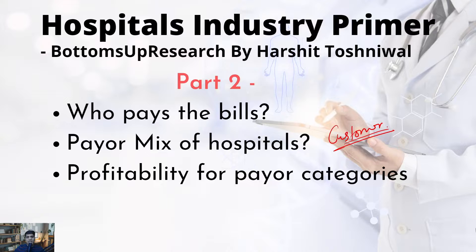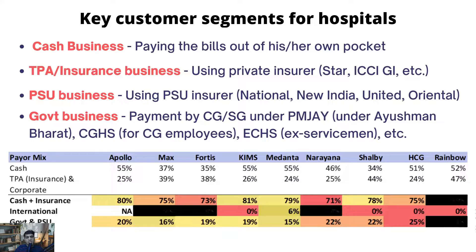There are typically 3 to 4 types of customer segments: cash or self-paying customers, insurance companies who pay on behalf of their policy holders, government which pays on behalf of government and state government schemes, and finally we are also going to look at the profitability of the different payer categories.